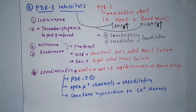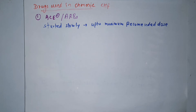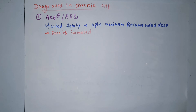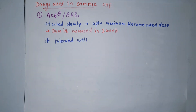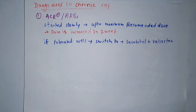Levosimendan also sensitizes the myocardium to calcium ions. Now, talking about drugs used in chronic CHF: we can use ACE inhibitors and ARBs. They are started slowly and the dose is increased up to the maximum recommended dose, increasing every one week. If these drugs are tolerated well, we switch to sacubitril plus valsartan. In the midway between the lowest dose and the maximum dose of ACE inhibitors and ARBs, we give a second class of drug: beta blockers.